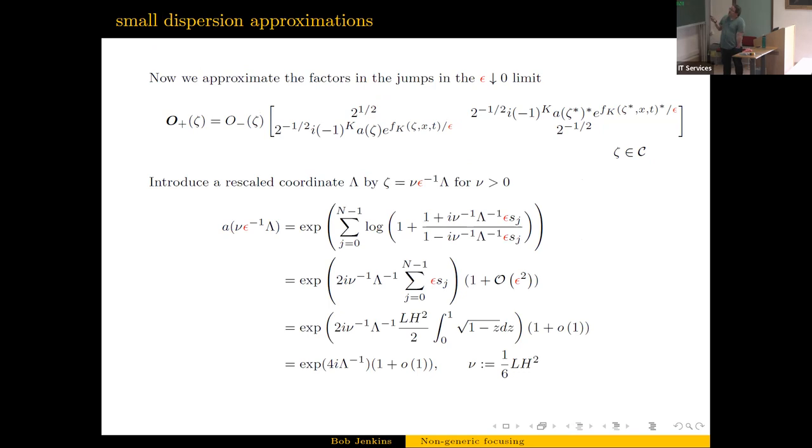So this function - and here's where you really see it - we take this function a(ζ) and we introduce a rescaled coordinate. Remember, a is this Blaschke product looking thing. So you can write it as n goes to infinity, it's going to look like some exponential. You write it as e to the sum of the logarithm of all the little Blaschke factor terms. And then you put the rescaled coordinates in and this sum starts to look like an integral.